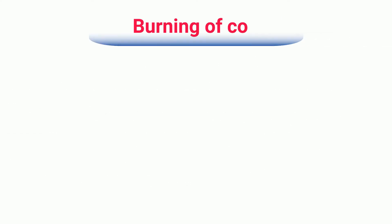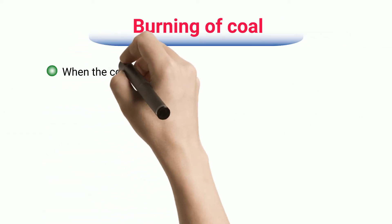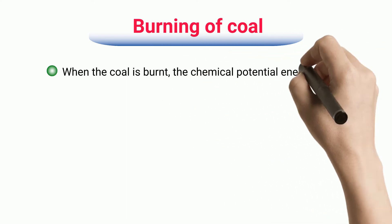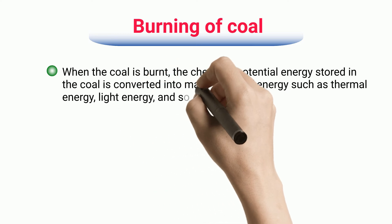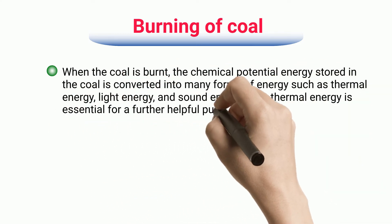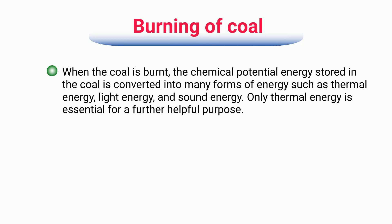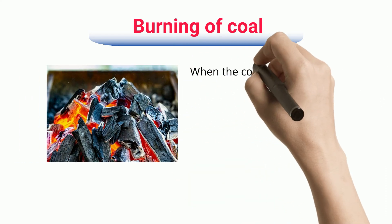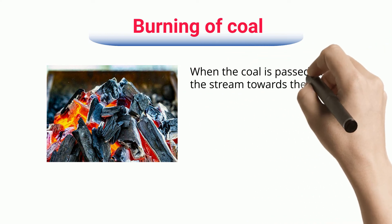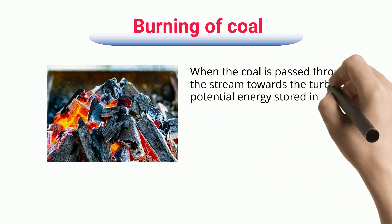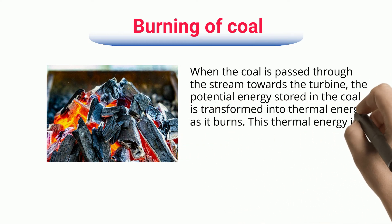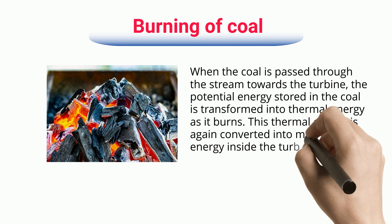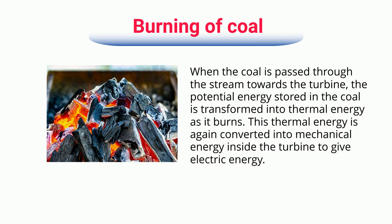Burning of Coal. When coal is burnt, the chemical potential energy stored in it is converted into many forms of energy such as thermal energy, light energy, and sound energy. Only thermal energy is essential for further use. When coal is passed through steam towards the turbine, the potential energy stored in the coal is transformed into thermal energy as it burns. This thermal energy is again converted into mechanical energy inside the turbine to generate electric energy.